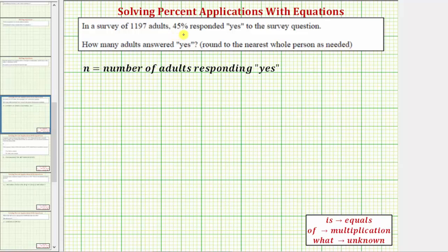So because 45% of the adults responded yes, to simplify the question, we need to determine what is 45% of 1,197 adults.